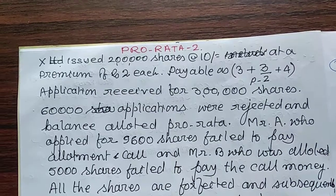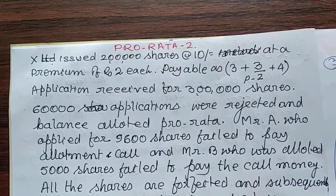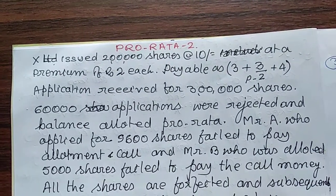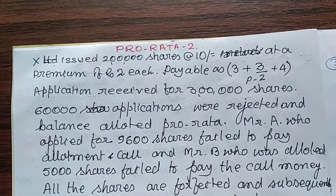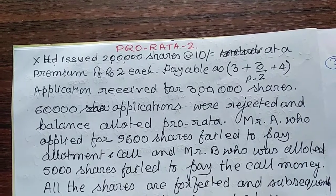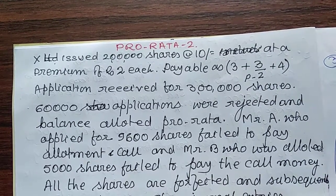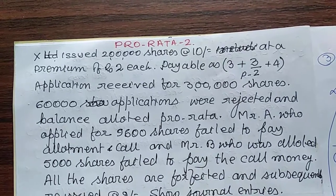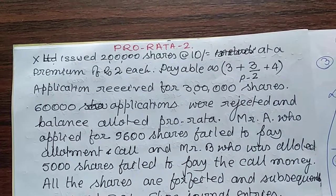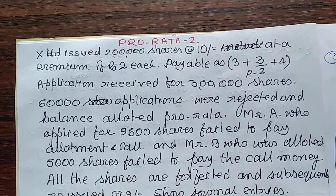In case of share issue, if applications received are more than the shares invited, that excess applications may be adjusted with the next call. This is said to be pro-rata allotment in technical terms of accounts.